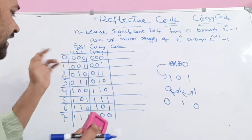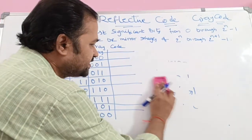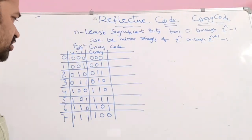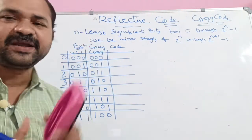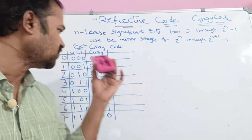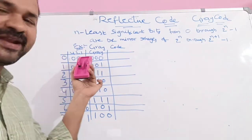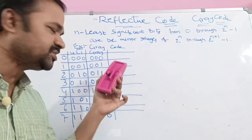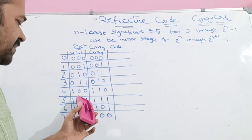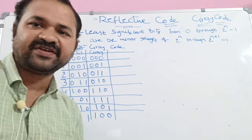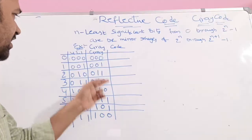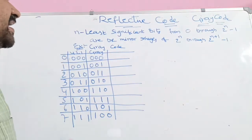Here we have taken 3-bit decimal numbers. For a 3-bit number, the positional weights are 4, 2, 1, and we can represent decimals from 0 to 7. So 0 in binary is 000, 1 is 001, 5 is 101, 7 is 111, and so on. Gray code is then calculated for each corresponding binary number.